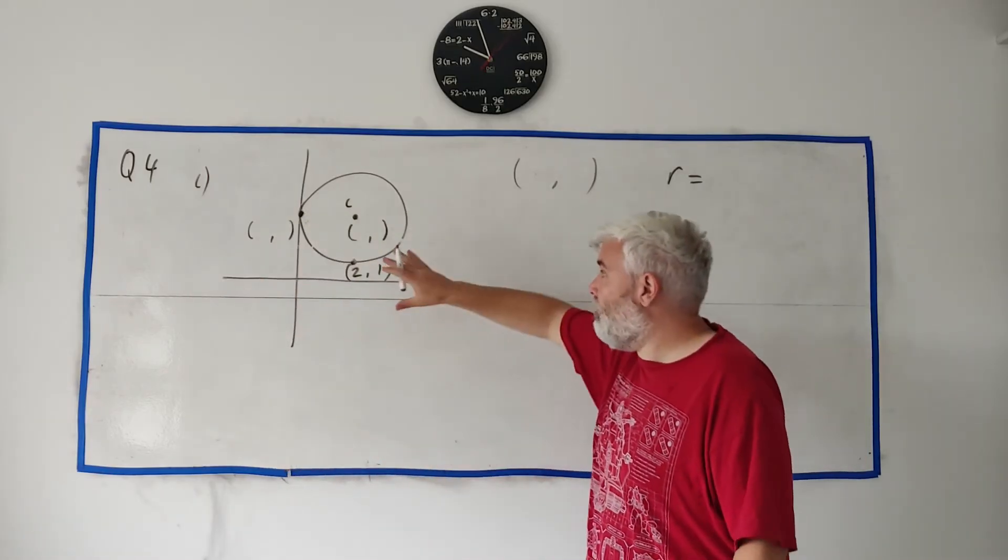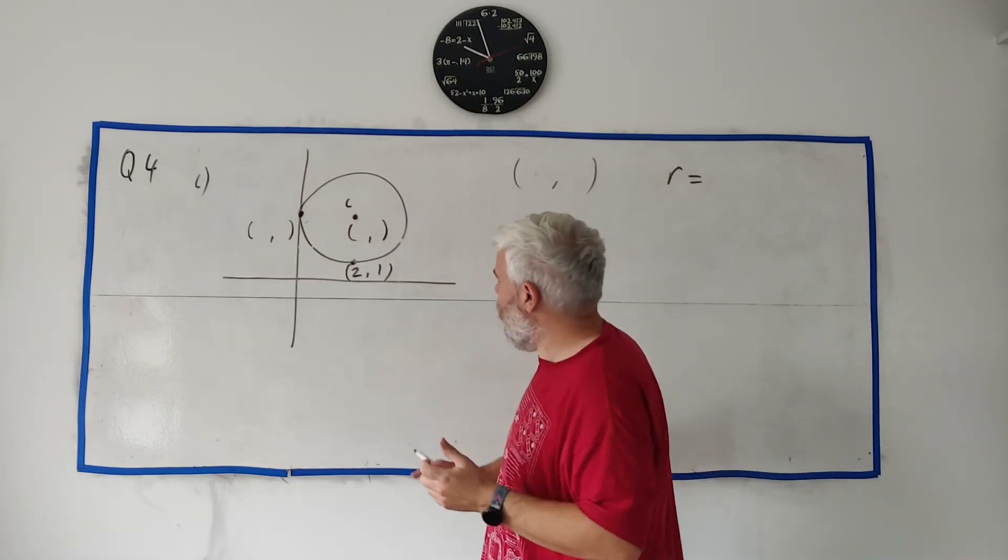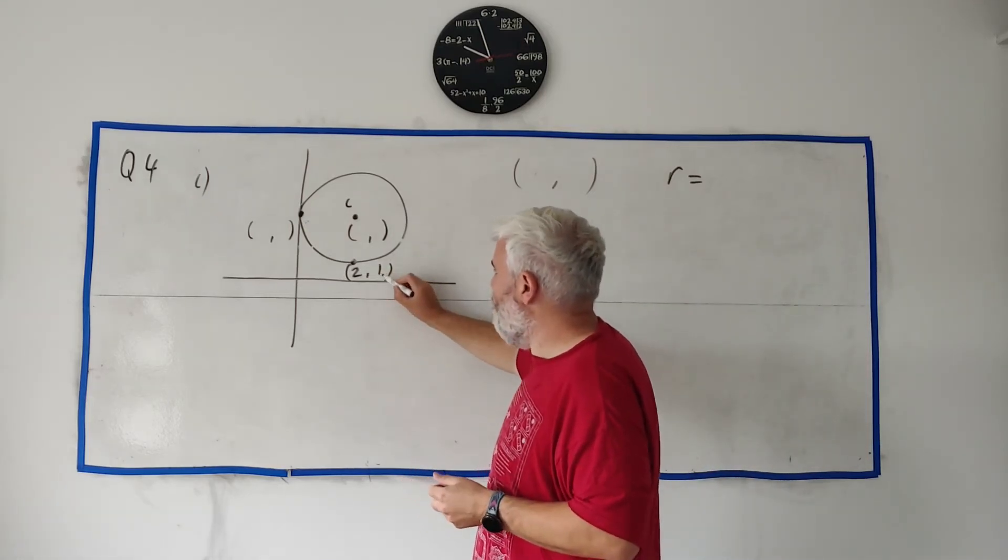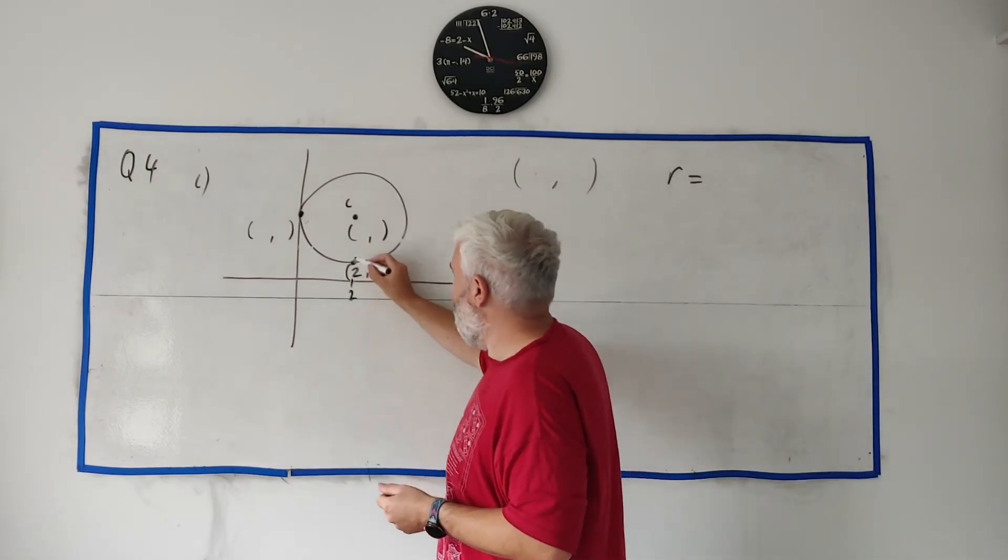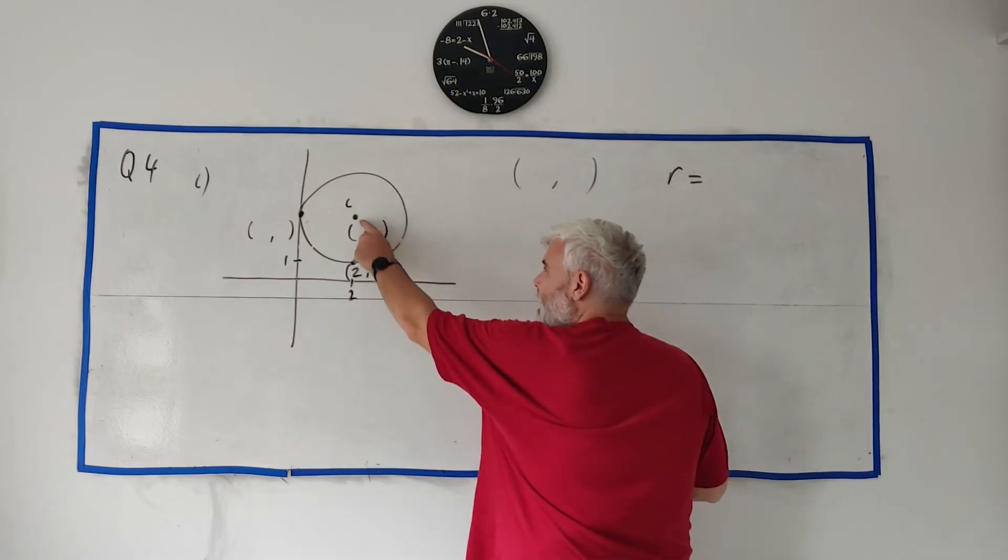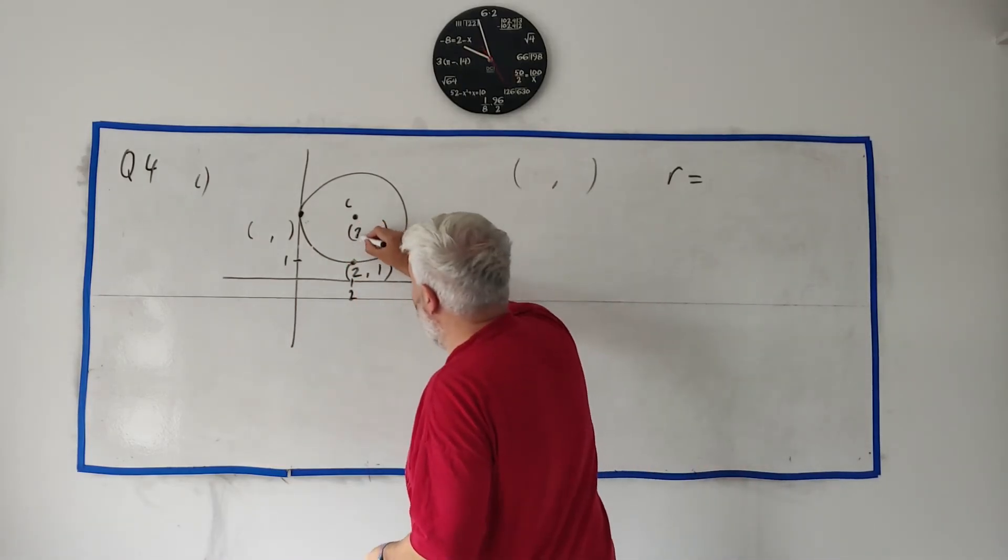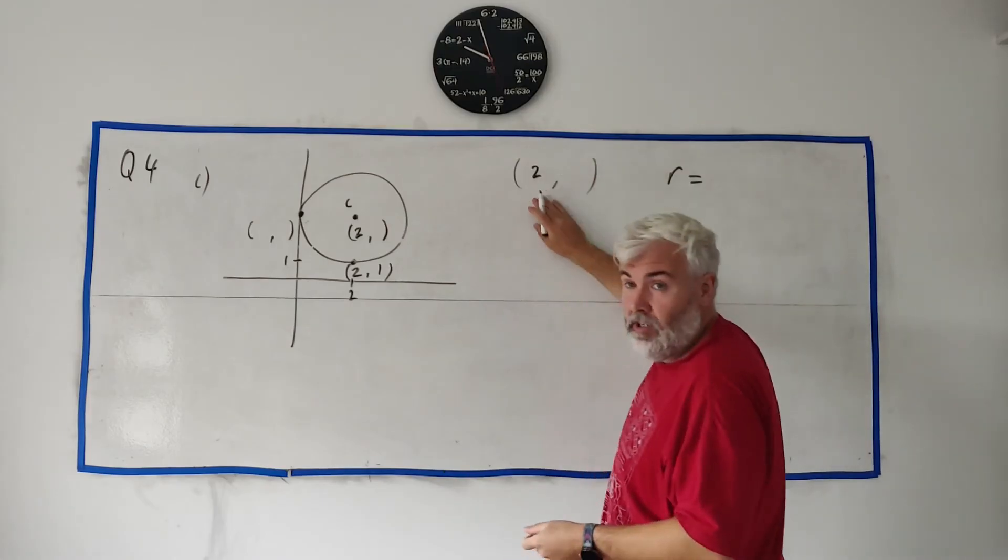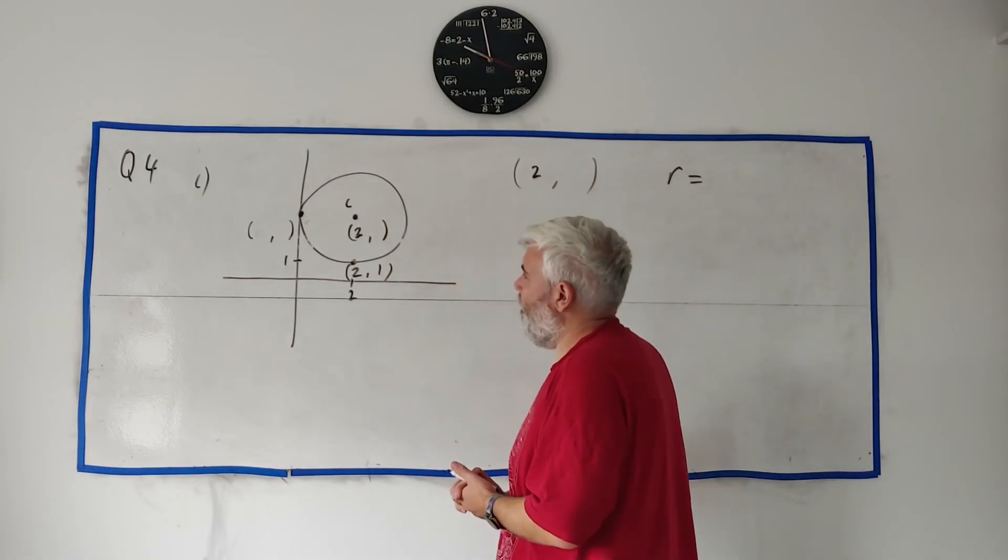Now with that information, we can fill in all of these numbers. So let me show you what I mean. So this one is (2, 1). That means the X part here is 2. That means the Y part here is 1. But look, the center is also above here. So the center has the point 2. So we can fill in part of our answer already.